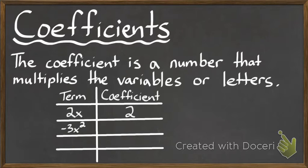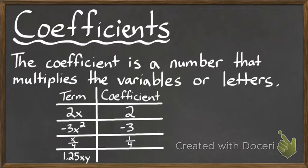For the term negative 3 times x squared, my coefficient is going to be negative 3. If I look at x over 4, this might be a little tricky, but this is essentially taking 1 quarter and multiplying it by x, so my coefficient is 1 quarter. And if I have 1.25 times x times y, the decimal out in front is my coefficient, so it's 1.25.